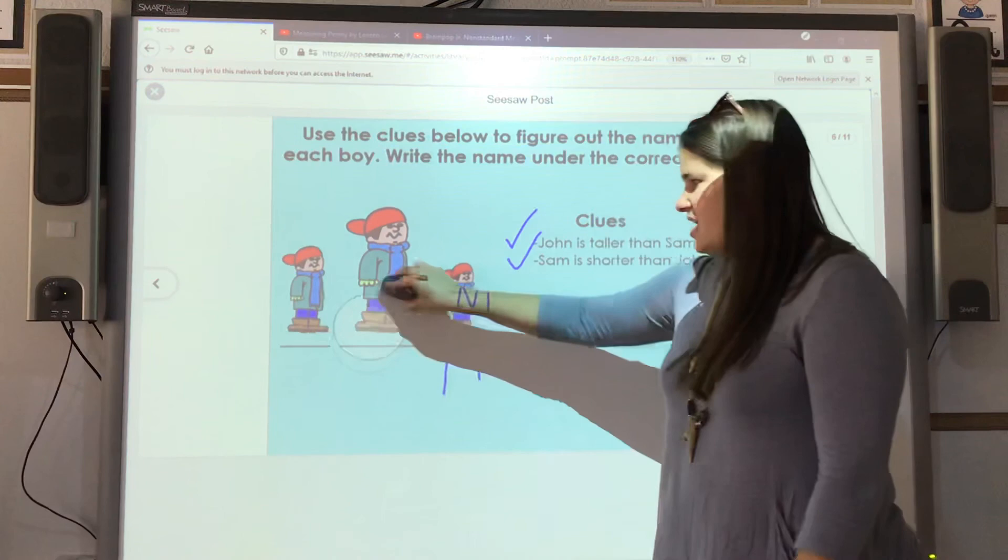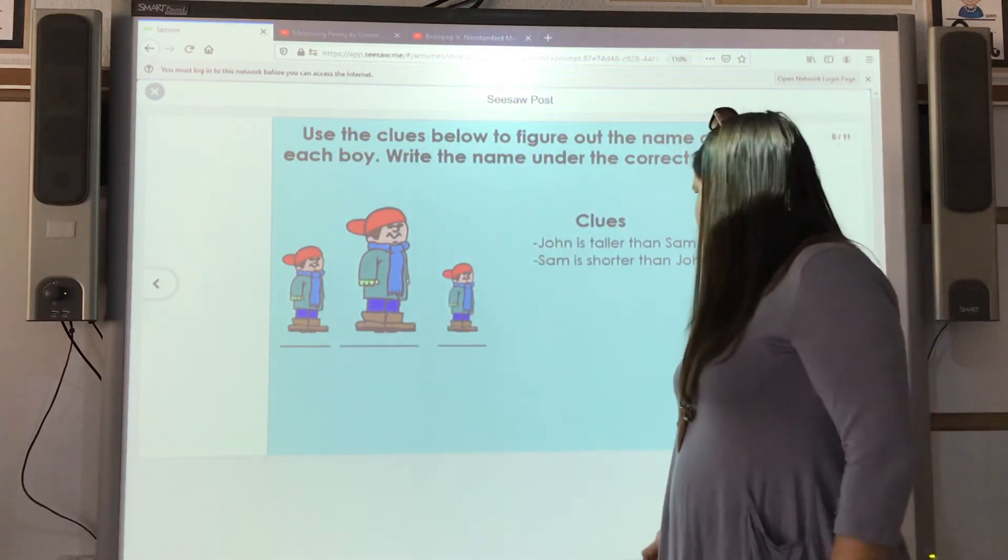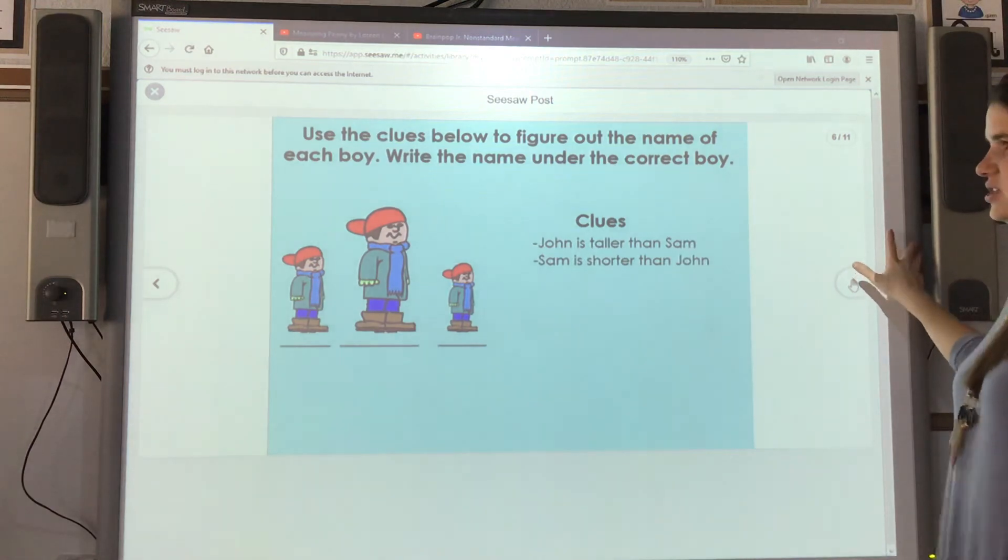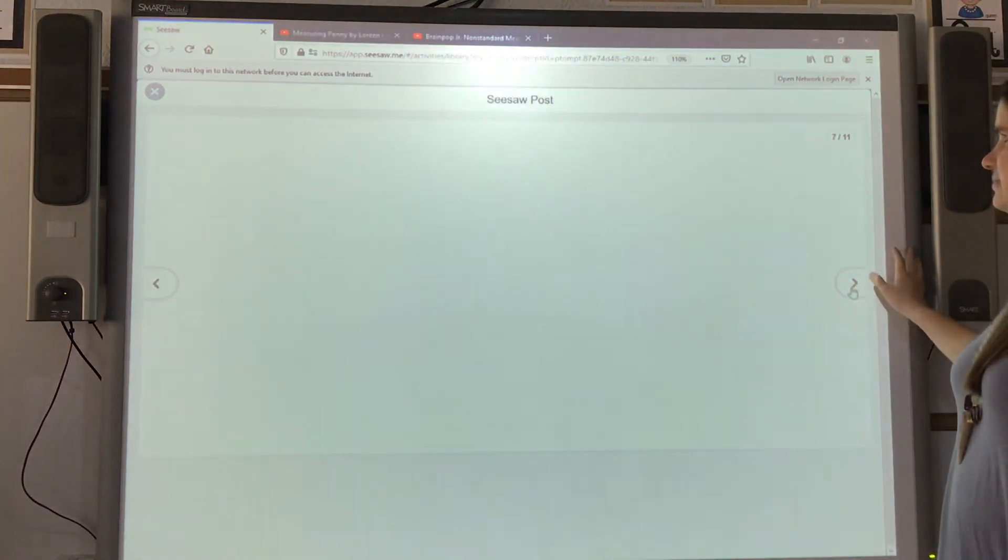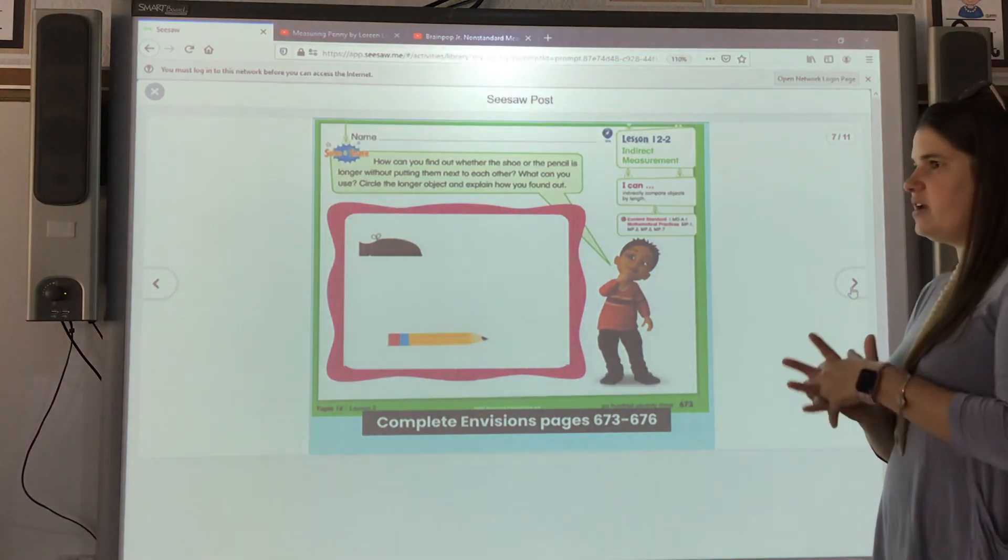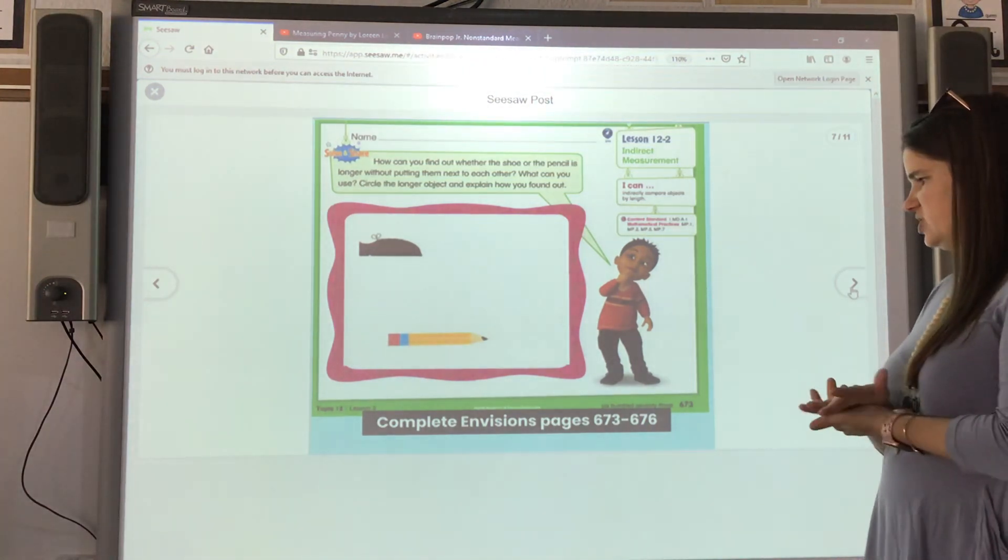You have another one that you need to try. John is taller than Sam. Sam is shorter than John. Your job for today is to complete your envisions math pages. You have pages 670.